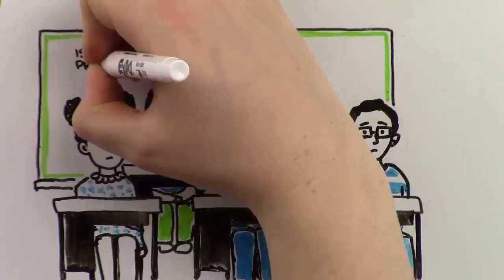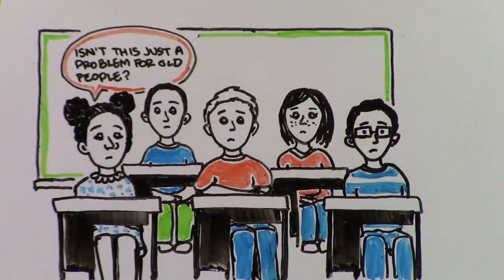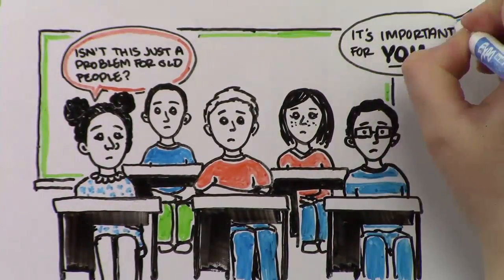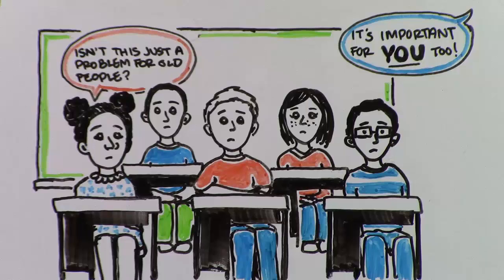Isn't that just a problem for old people? This is really important for you to know too. You're outside a lot and breathe faster than adults, which means you're more at risk for getting sick from bad air.